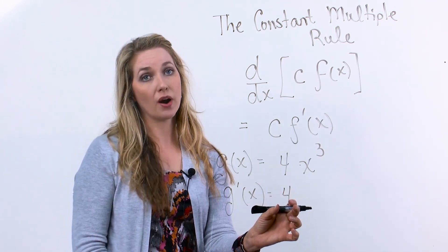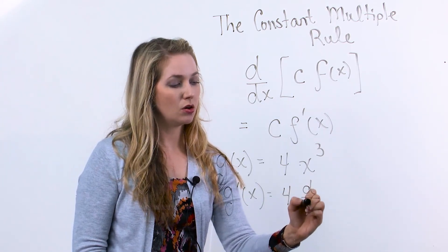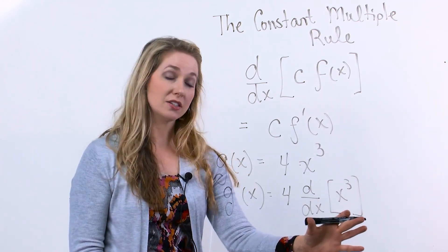So I'm going to keep 4 as a constant multiplier. I am then going to find the derivative of the remaining function, so the derivative of x cubed.